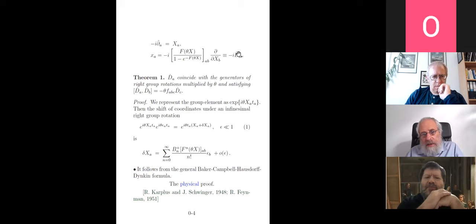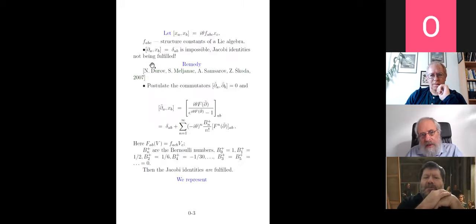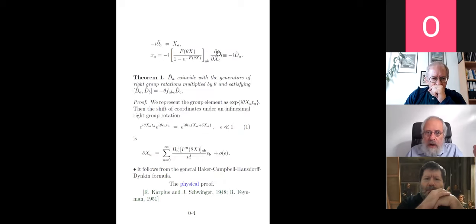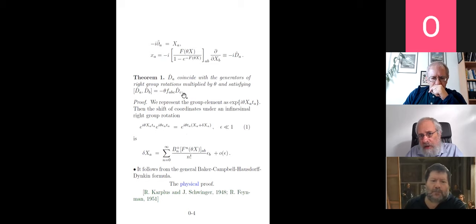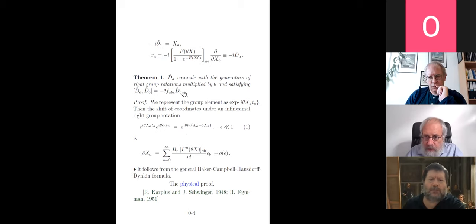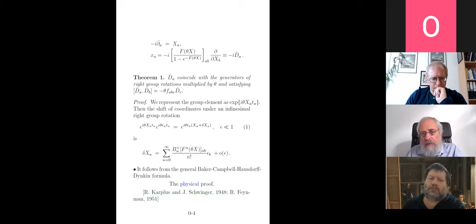It turns out that this differential operator is just the generator of group rotations — nothing else. The operators satisfy the commutation relation of some group, and so these D̃ are left group rotations.